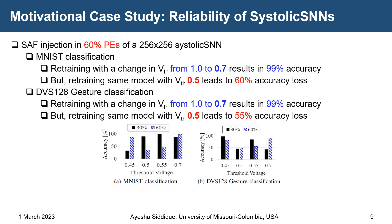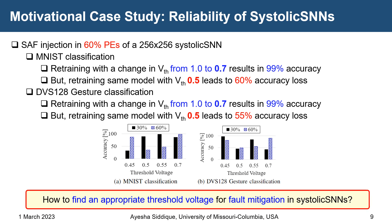When stuck-at faults are in 60% of processing elements of a 256x256 systolic array: for MNIST, changing VTH from 1.0 to 0.7 in retraining gives 99% accuracy, but retraining with VTH 0.5 gives 60% accuracy loss. Likewise, for DVS gesture, retraining with VTH 0.7 gives 99% accuracy, but VTH 0.5 results in 55% accuracy loss. So changing VTH during retraining significantly affects performance in the presence of faults — sometimes giving good accuracy, sometimes not.